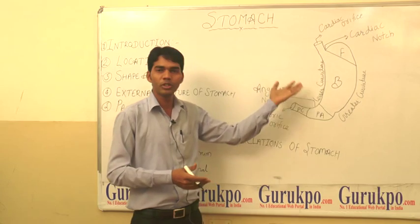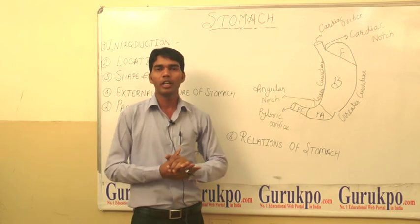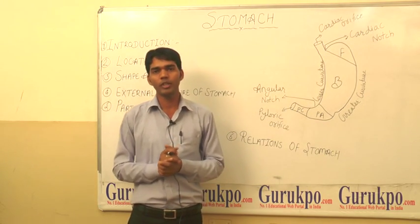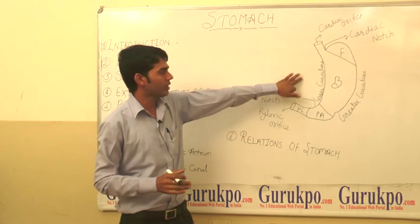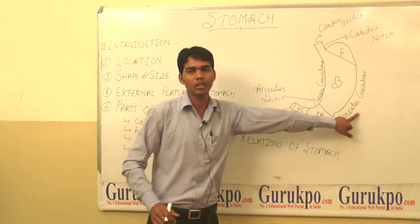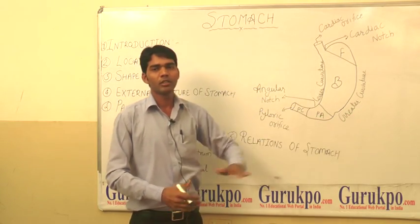The stomach has two curvatures or borders. The first one is the lesser curvature and the next is the greater curvature.